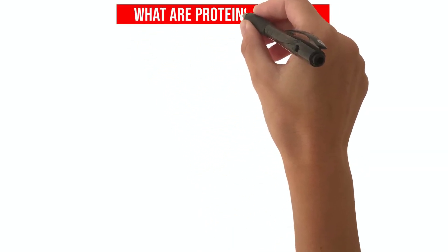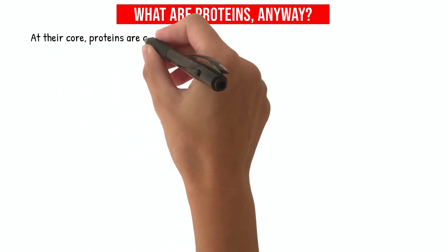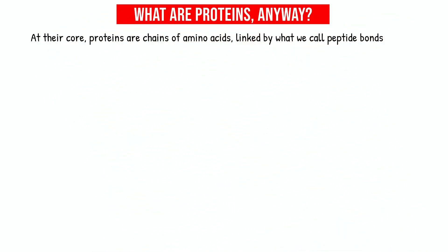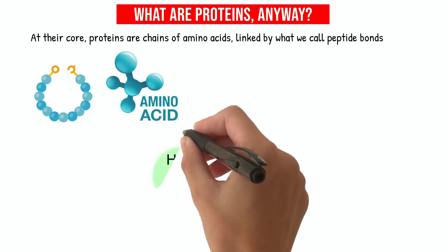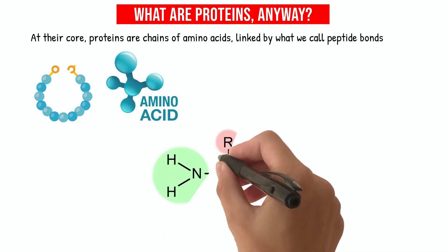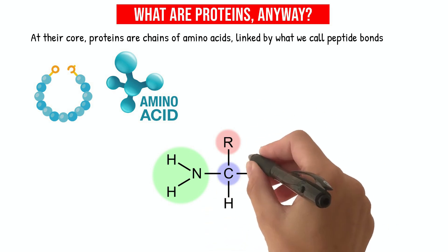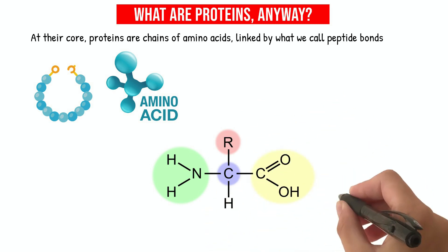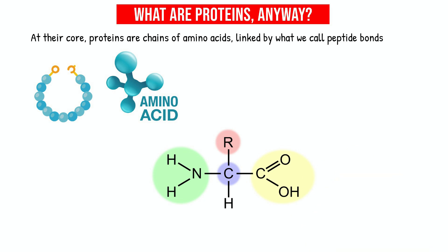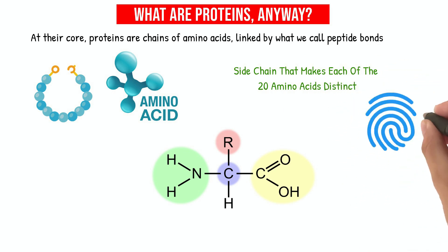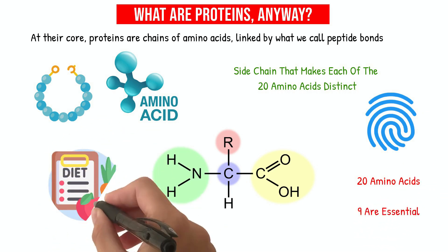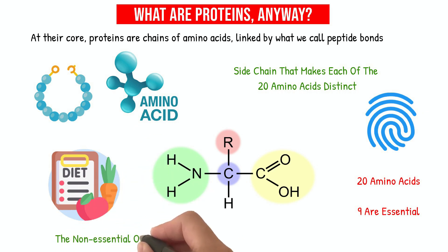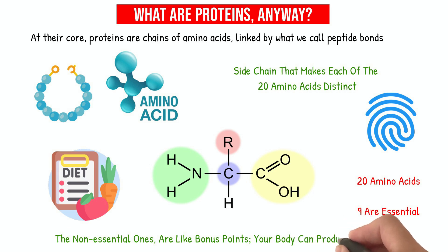What are proteins, anyway? At their core, proteins are chains of amino acids linked by peptide bonds — like a pearl necklace where each pearl is an amino acid. These amino acids have a standard blueprint: a central carbon atom, a hydrogen atom, a carboxylic acid group (COOH), an amino group (NH2), and a unique carbon side chain. It's this side chain that makes each of the 20 amino acids distinct. Among these 20 amino acids, 9 are essential — your body can't make them, you've got to get them from your diet. The rest, the non-essential ones, your body can produce.